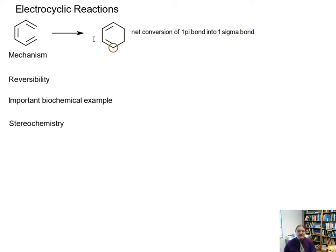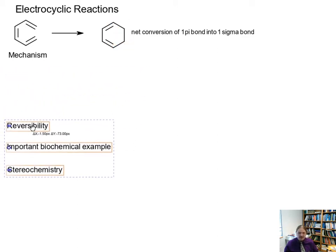If you count the pi bonds and sigma bonds in the reactant and the product, the reactant has five sigma bonds and three pi bonds, the product has six sigma bonds and two pi bonds. So let's draw the mechanism for this reaction.